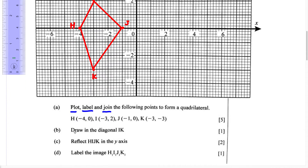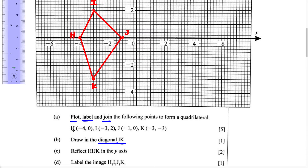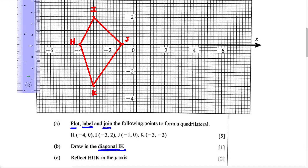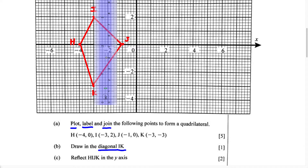Part B says draw in the diagonal IK. They want you to draw in a diagonal, and they tell you it's going to be IK. So we're going to use these two points to draw our diagonal. Using a different color ink, the diagonal is going to go from I to K.